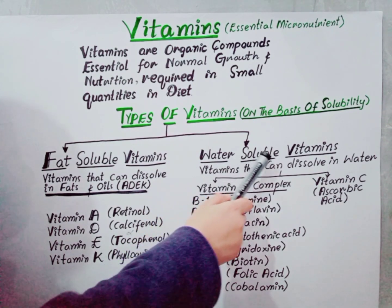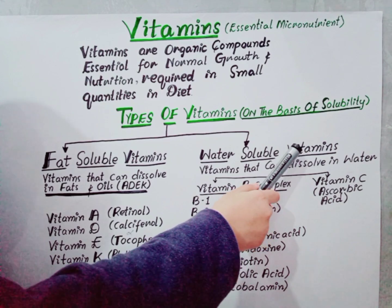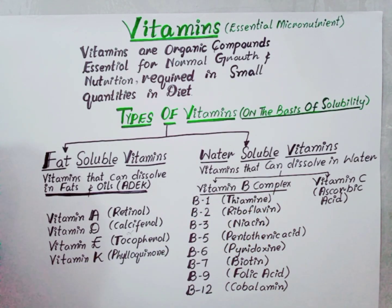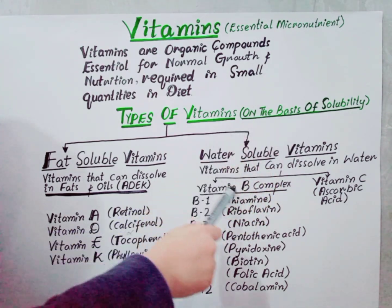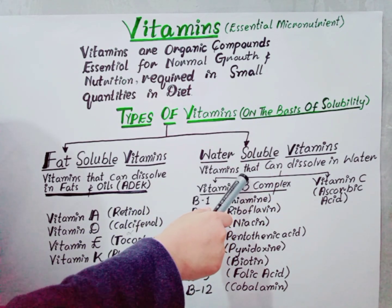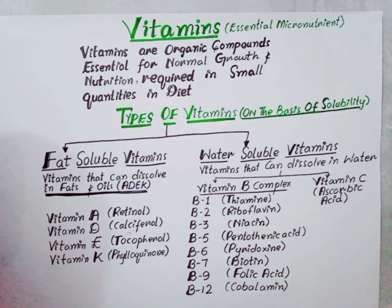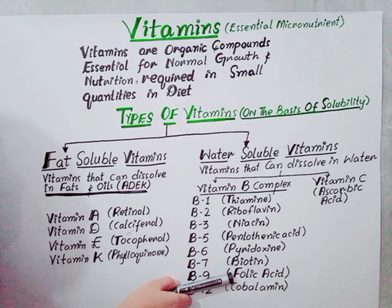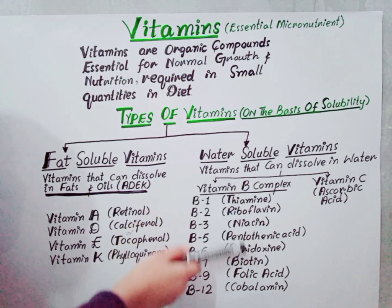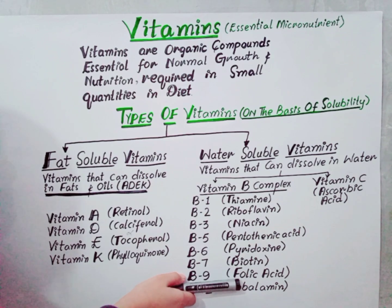Now we have water-soluble vitamins. Water-soluble vitamins dissolve only in water and are generally not stored in the body. For this reason, we need water-soluble vitamins regularly from our diet, and the vitamin B complexes are very essential — their deficiency may cause many severe diseases in our body.